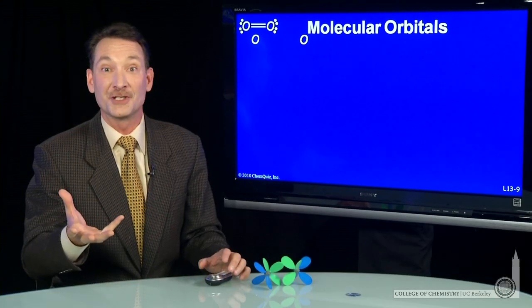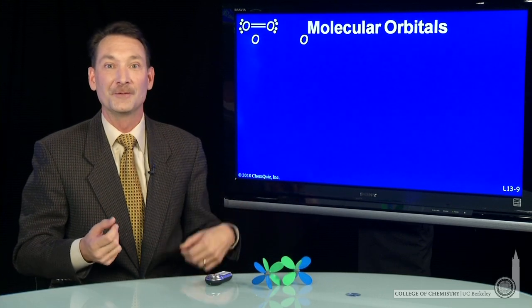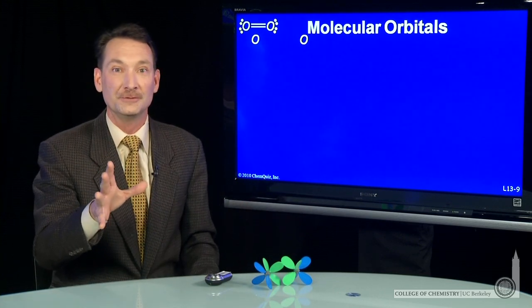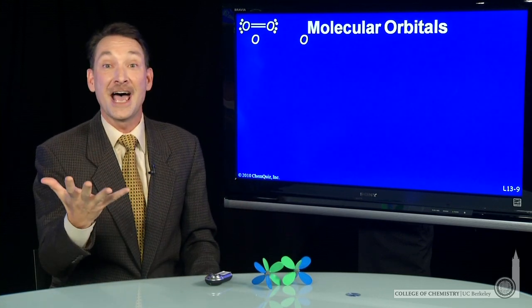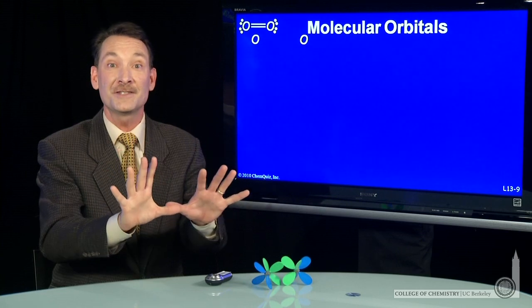Let's look at both the quantum mechanical description and the Lewis dot structure description of a molecule. We'll pick oxygen, O2. Oxygen, each atom has six valence electrons in principal quantum level 2. So when they come together, it's a 12-electron system.